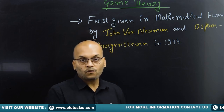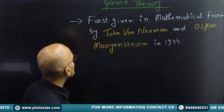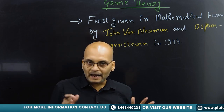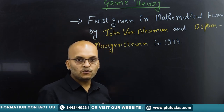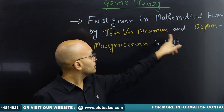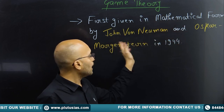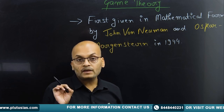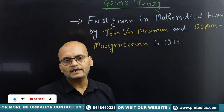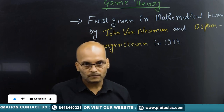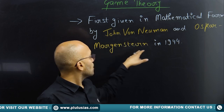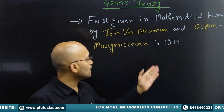Let's get started and see what's there in this topic. The concept of game theory can be applied at many places. This was given by John von Neumann and Oscar Morgenstern in mathematical form. The year was 1944.